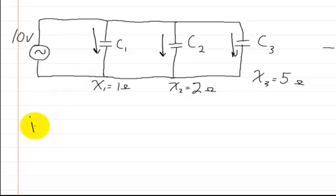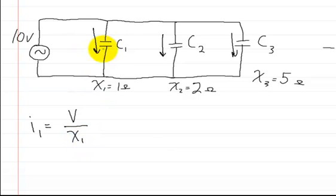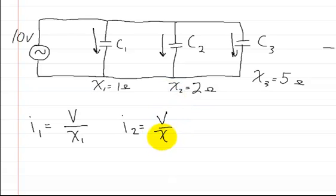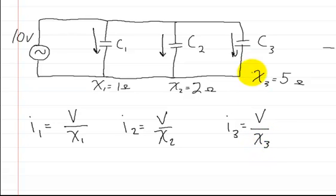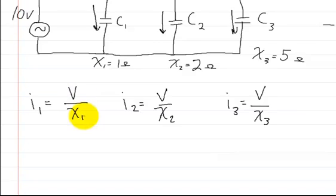The current in branch one is going to be equal to the voltage divided by the reactive capacitance of the first capacitor. For the second branch, it's going to be the same thing — the voltage divided by the reactive capacitance of the second one. And for the third branch, it's just going to be the voltage of the supply divided by the reactive capacitance of the third capacitor. All you really need to do is plug in the values.